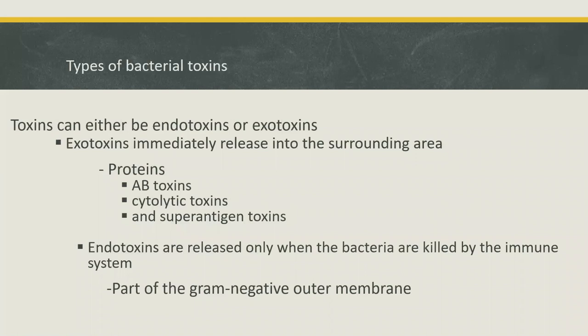Exotoxins are toxic proteins secreted by the pathogen as it grows. These toxins travel from a site of infection and cause damage at distant sites. Exotoxins fall into three categories in terms of their mechanisms: AB toxins, catalytic toxins, and superantigen toxins.